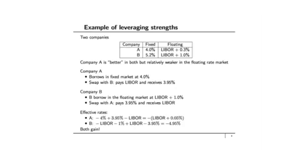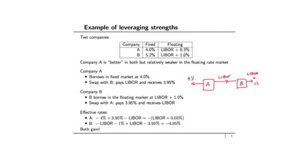Company A borrows at 4%, meaning it pays out 4%. Company B borrows at LIBOR plus 1%. They then construct a swap where Company A pays Company B LIBOR and Company B pays Company A 3.95%. The net effect is that Company A ends up paying LIBOR plus 0.05%, which is better than what it could have borrowed in the floating rate market, and Company B ends up paying 4.95%, which is better than what it could have gotten in the fixed rate market.